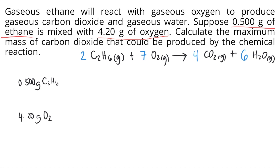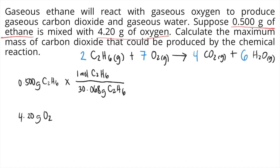What you need to do now is solve separately — we will solve how much product each reactant can make. Starting with 0.500 grams of C2H6, the first thing you need to do is convert this into moles using the molar mass of C2H6. One mole of C2H6 is equivalent to 30.068 grams, so the grams cancel out and now you have moles of C2H6.